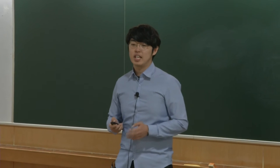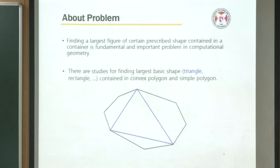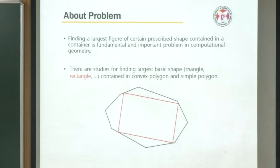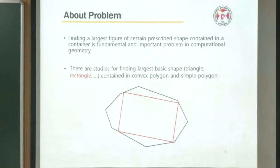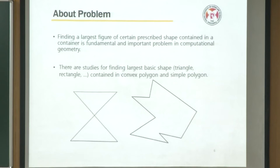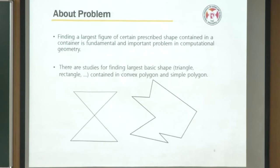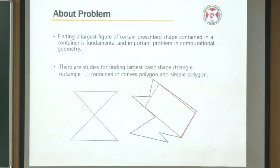A convex polygon is a polygon which consists of convex vertices, and a convex vertex is a vertex which has an internal angle less than pi. And there is a vertex which has an internal angle bigger than pi — we call it a reflex vertex. Here is an example of a convex polygon and finding the largest triangle in it, and also finding the largest rectangle in a convex polygon. Our problem is finding the largest rectangle in a simple polygon. A simple polygon means a polygon without intersection of edges. The left figure is a polygon but has an intersection, so it is not simple. The right polygon has no intersection of edges, so it is a simple polygon.